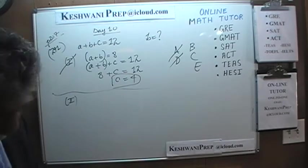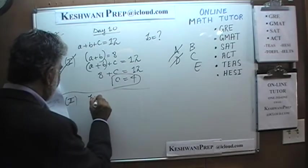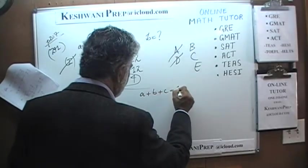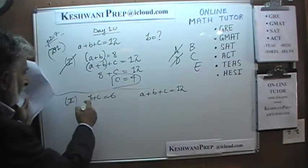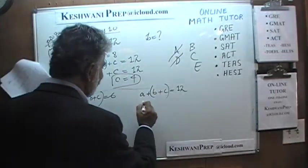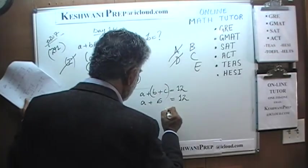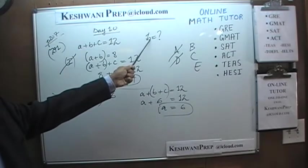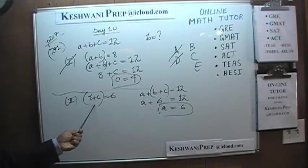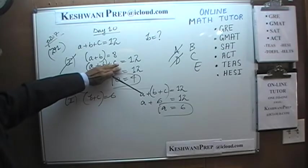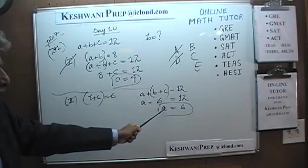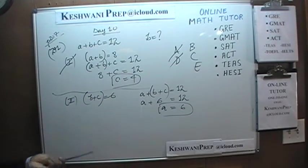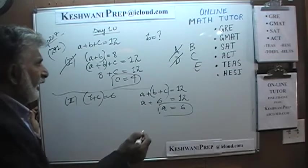The second statement tells us b + c = 6. Since a + b + c = 12 and b + c = 6, then a = 6. But simply knowing what a is does not enable us to figure out what b is, because we don't know what a + b is. The second statement by itself is also not enough, so the answer is not B.